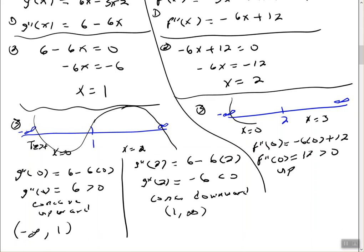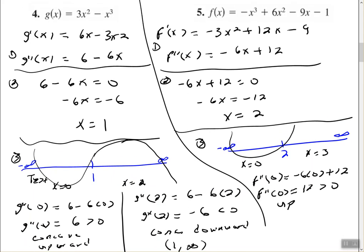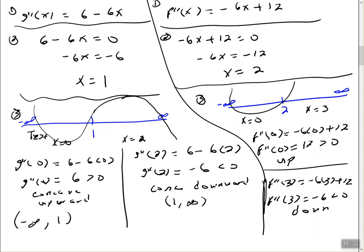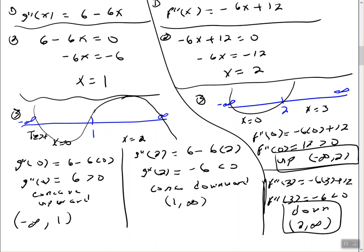You can always put the original function in Desmos to take a look at it. Testing x equals 3: negative 6 times 3 plus 12 equals negative 18 plus 12 equals negative 6, which is less than 0, so it's concave downward on the interval from 2 to infinity. Intuitively, that tells me from negative infinity to 2 somewhere in that interval I have a relative minimum, and from 2 to infinity I should have a relative maximum.